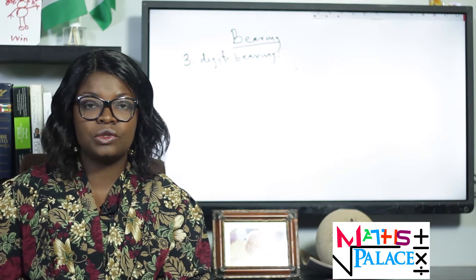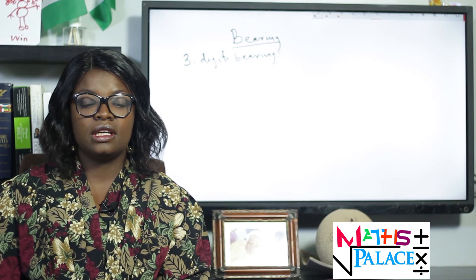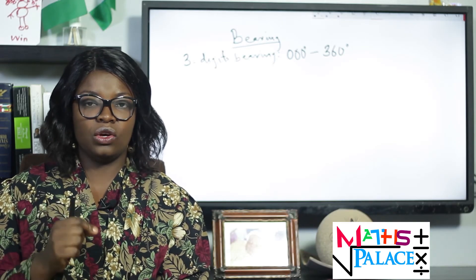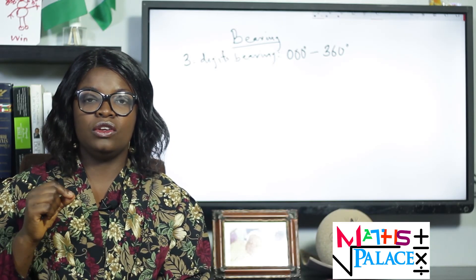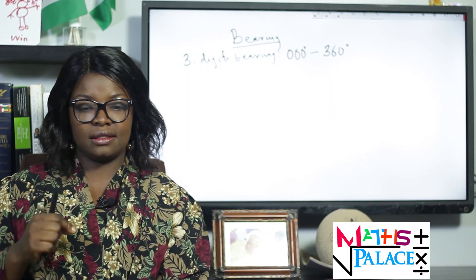Instead of having zero to three-sixty — from the north, you go back to the north — we have it as 000 to 360 degrees. 000 is the same as zero degrees, but it has to be three digits because it is a three-digit bearing. It takes its bearing only from the north, unlike the acute angle bearing that takes from both the north and south.